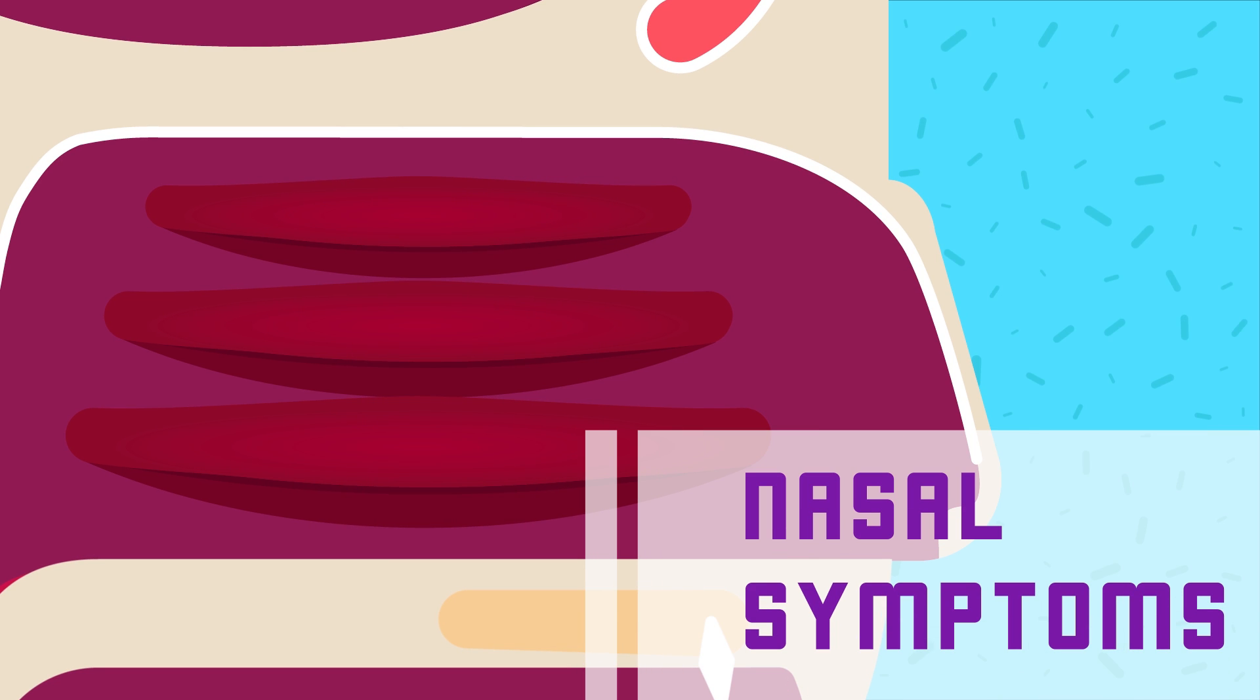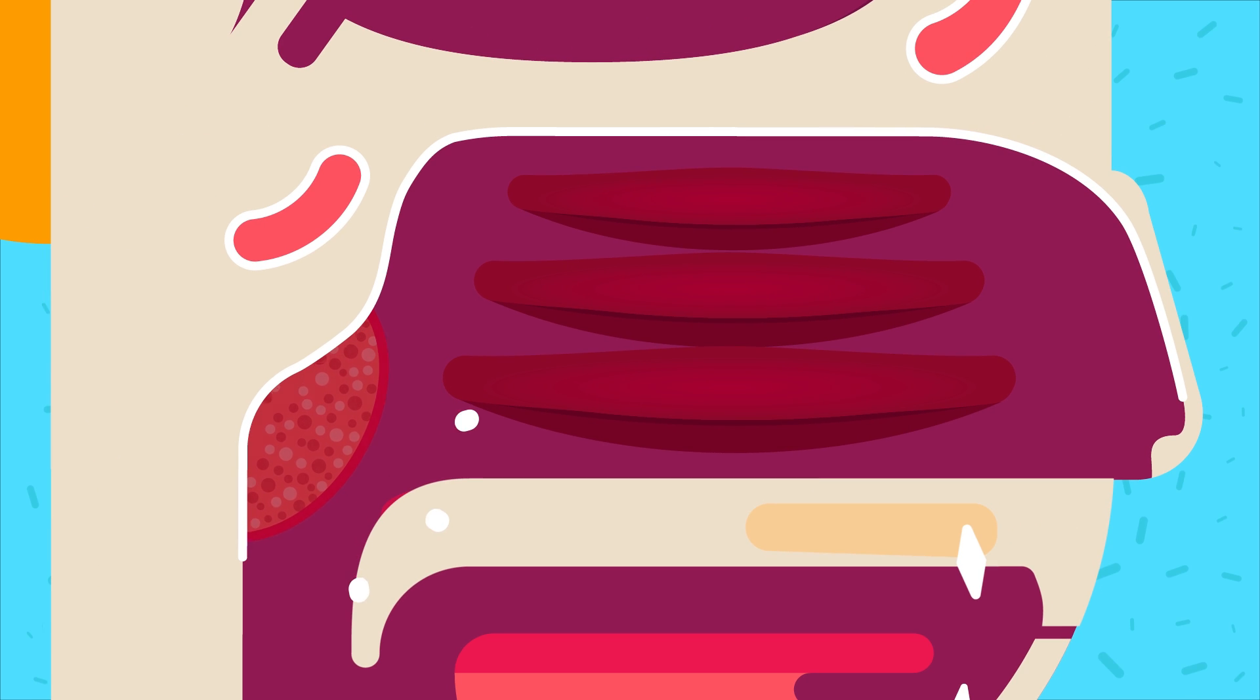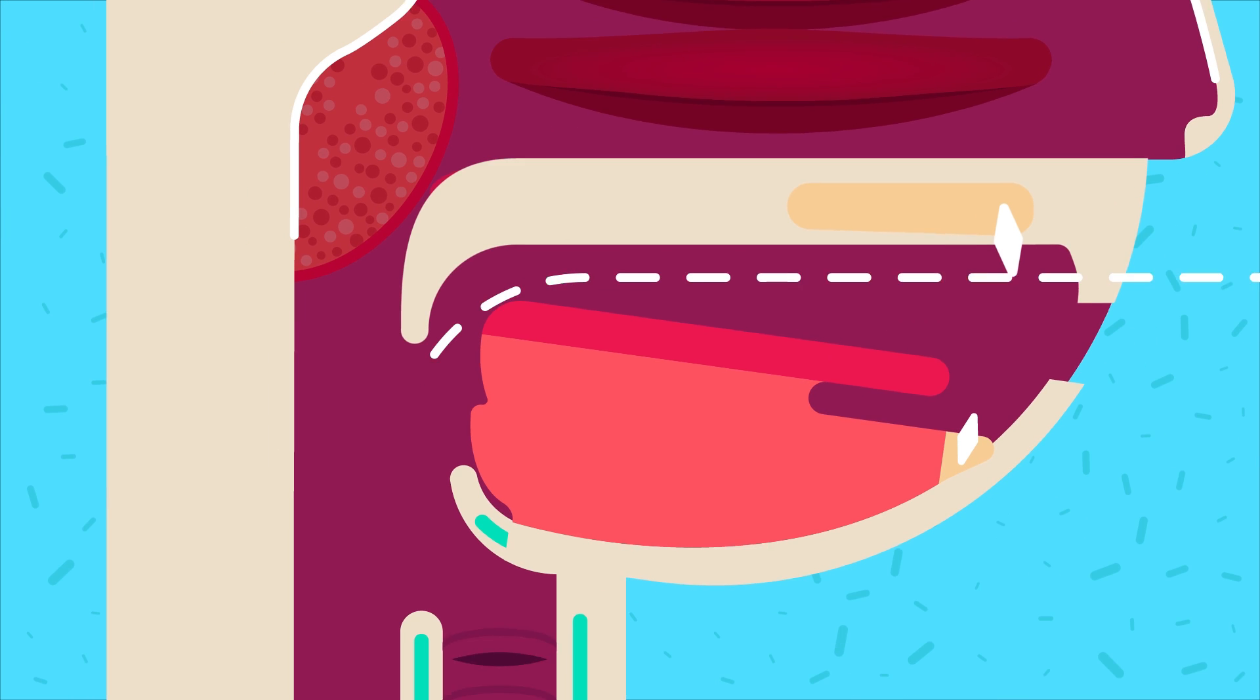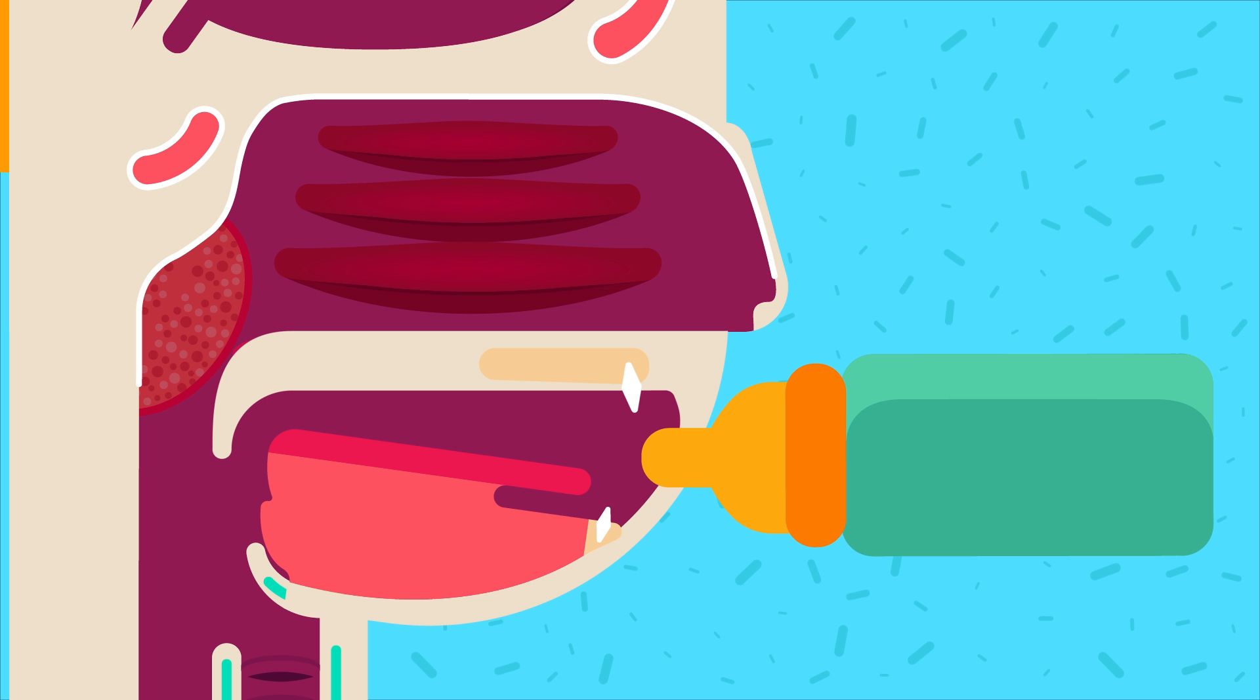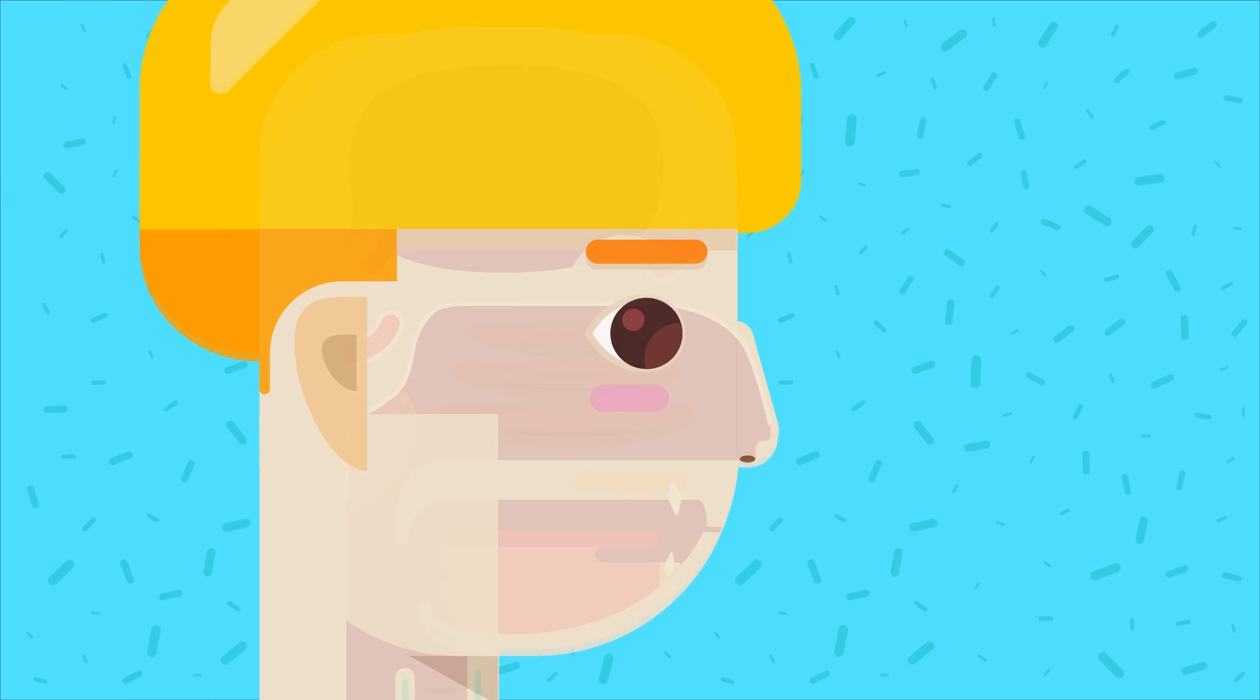or general symptoms. A. Nasal Symptoms. 1. Nasal obstruction is the commonest symptom. This leads to mouth breathing. Nasal obstruction also interferes with feeding or suckling a child. As respiration and feeding cannot take place simultaneously, a child with adenoid enlargement fails to thrive.